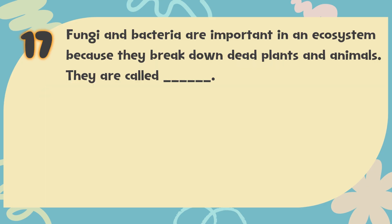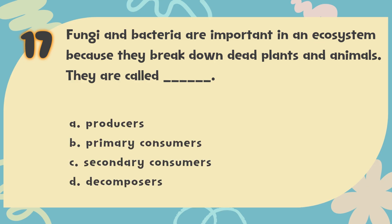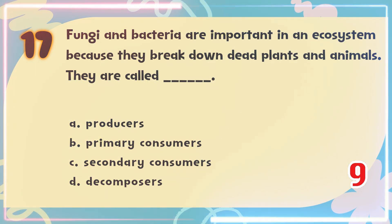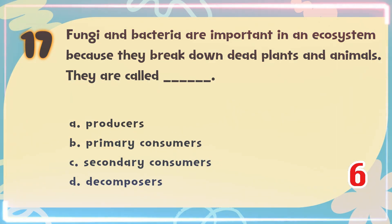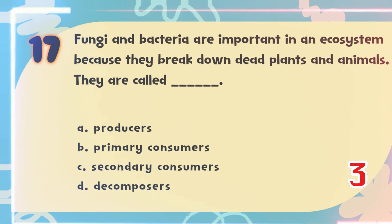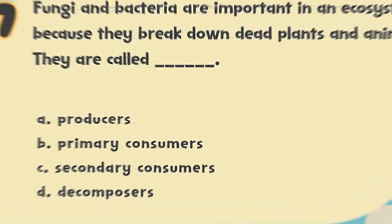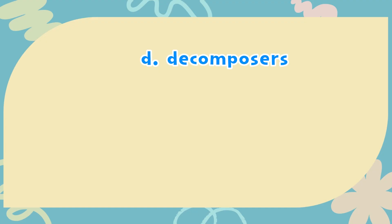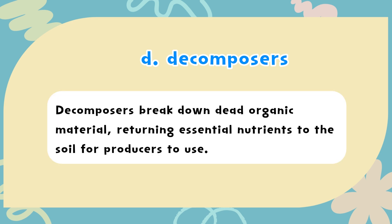Number 17. Fungi and bacteria are important in an ecosystem because they break down dead plants and animals. They are called blank. The choices are: A. Producers, B. Primary consumers, C. Secondary consumers, D. Decomposers. The correct answer is D. Decomposers. Decomposers break down dead organic material, returning essential nutrients to the soil for producers to use.